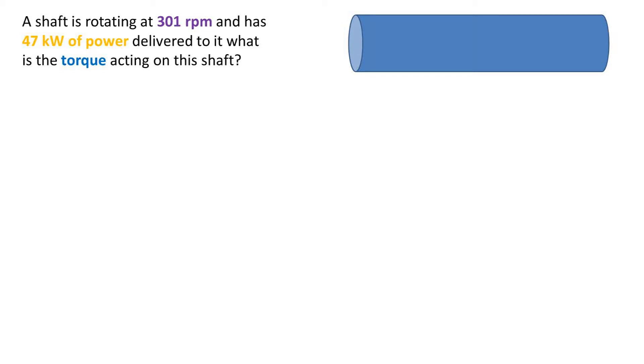In this problem, we have a shaft that is rotating at 301 rpms, or rotations per minute, and has 47 kilowatts of power delivered to it. What is the torque acting on this shaft?